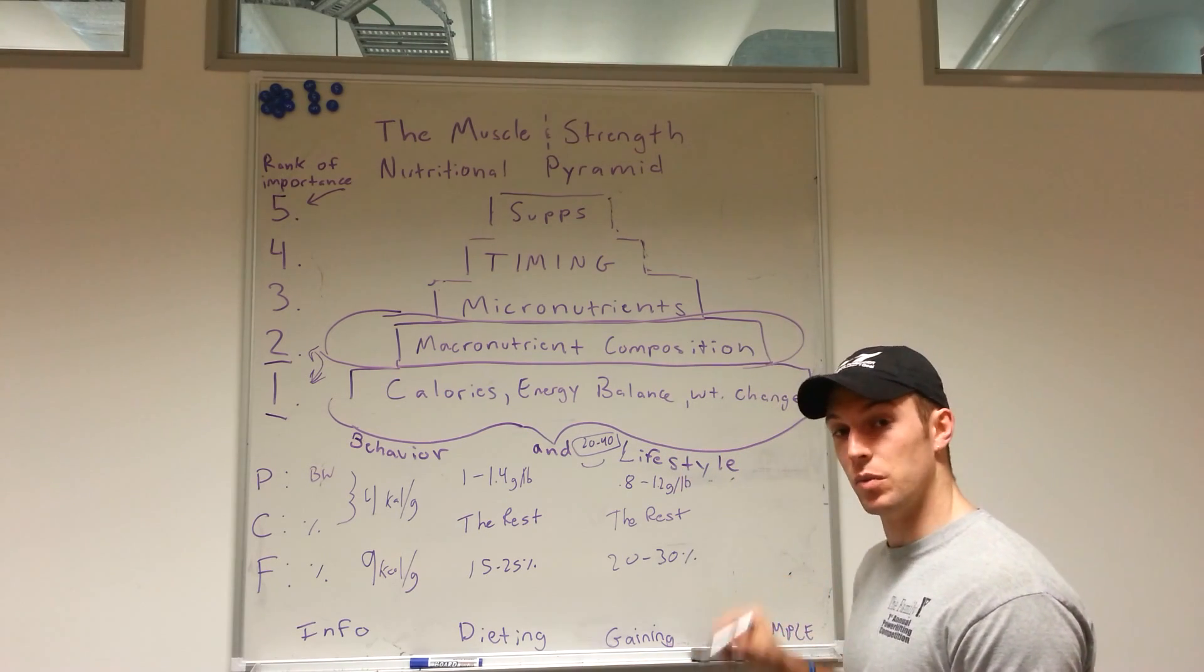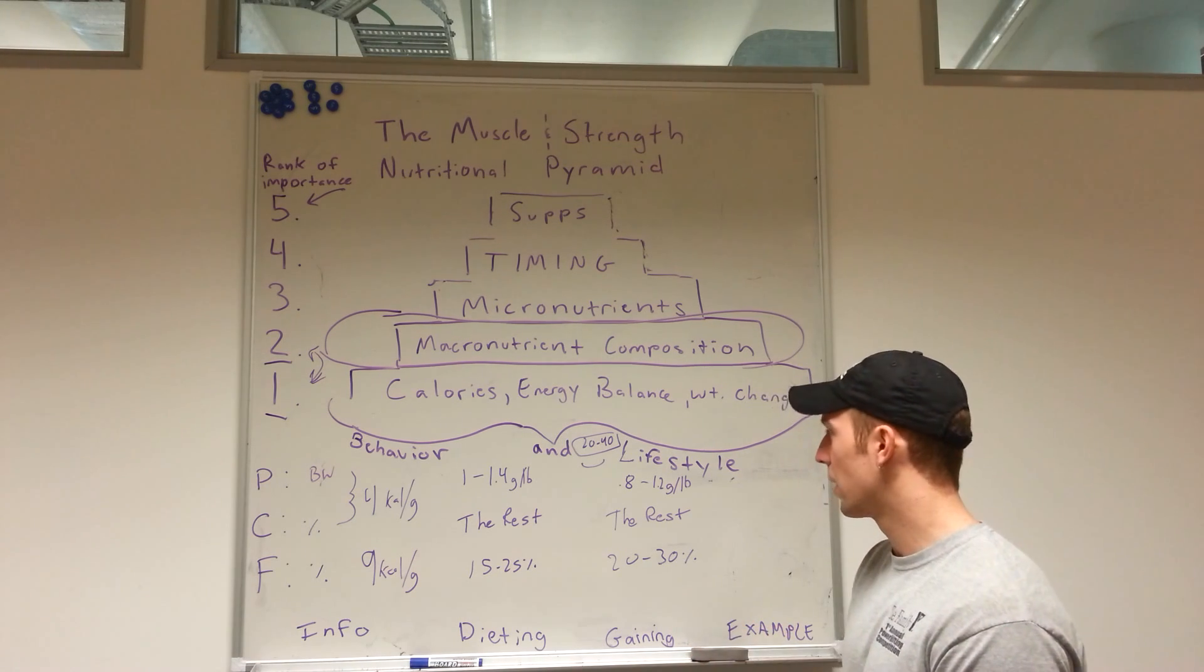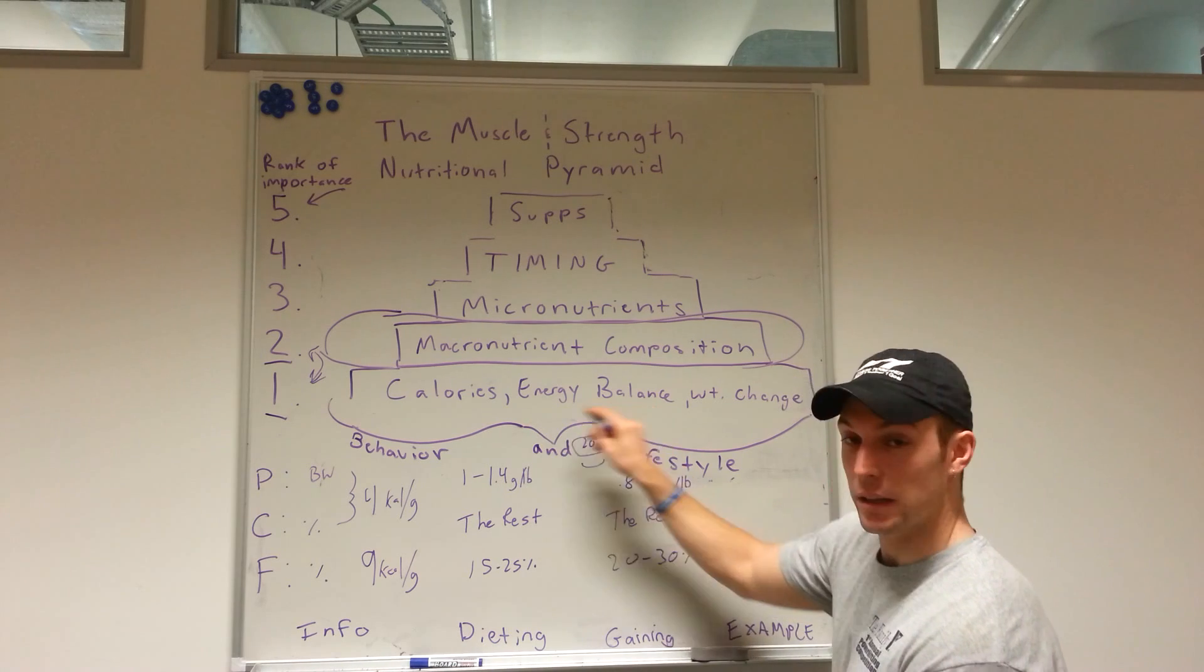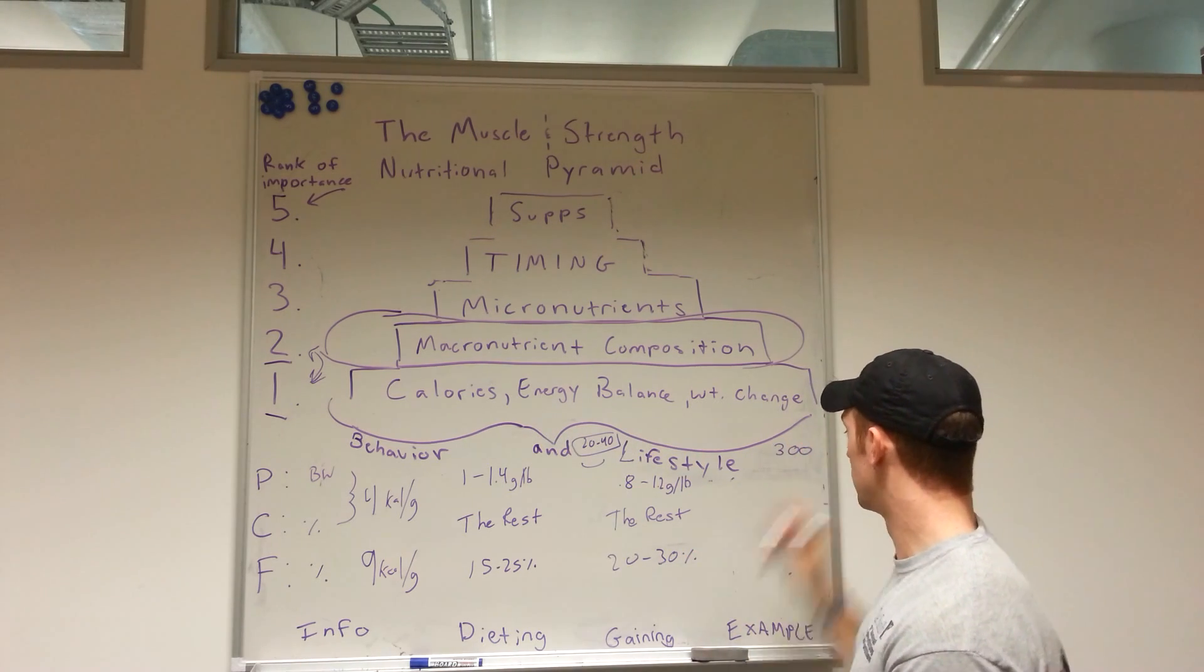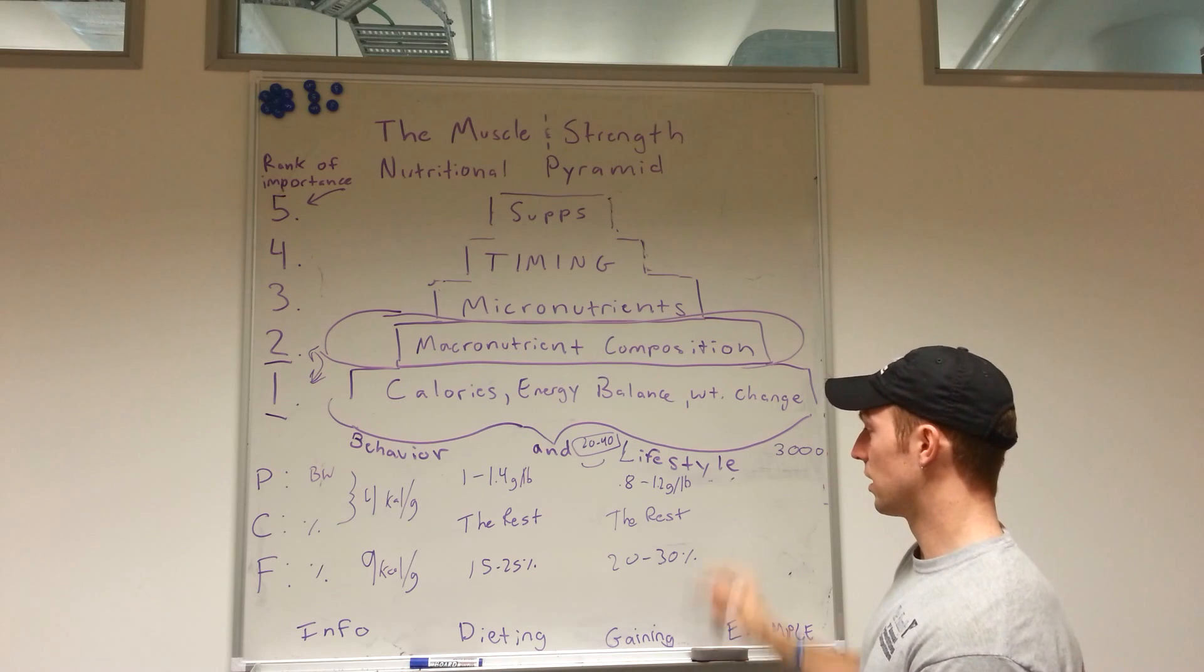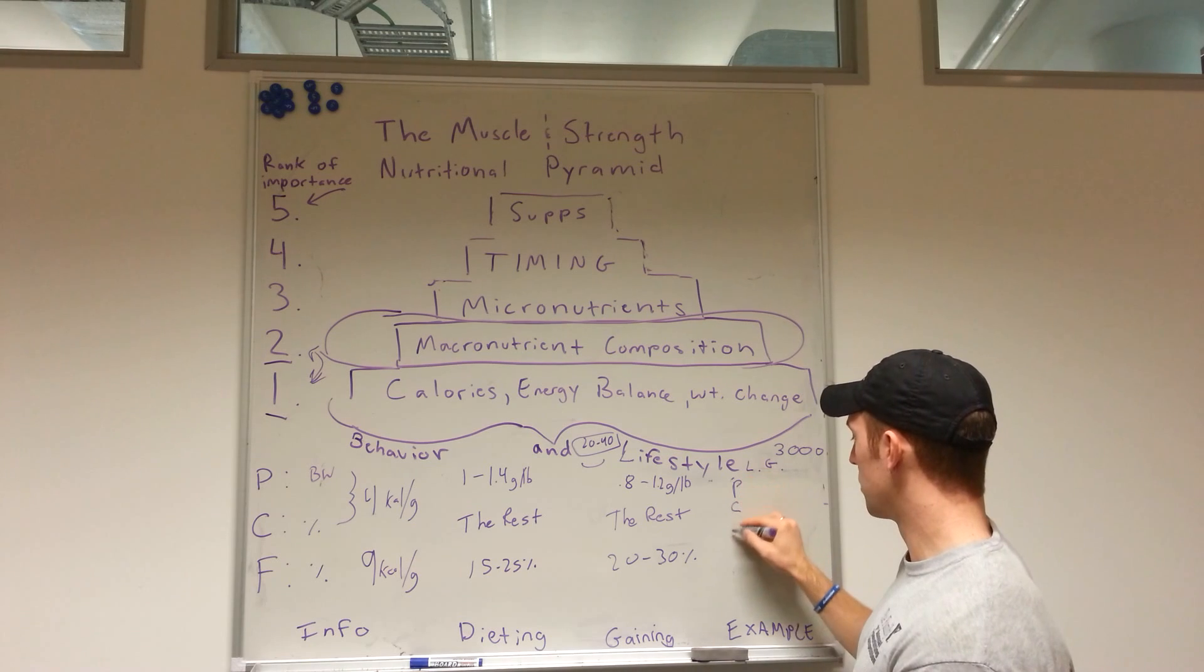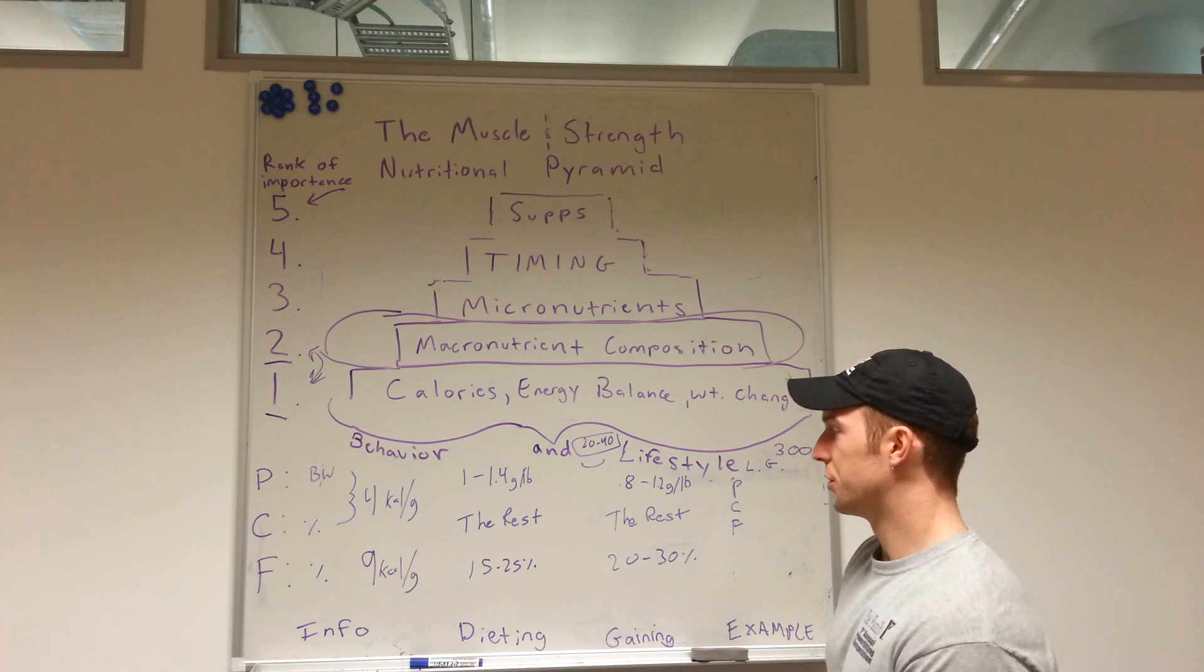So bear with me on that limitation. Alright, next thing I want to do is actually work out an example here. So we stick with our 200 pound male, who was kind of like me last time. And let's take a dead middle kind of energy balance: we've got 3,000 calories to play with. Let's say he's gaining, so we'll go lean gaining.